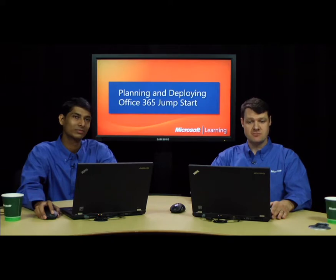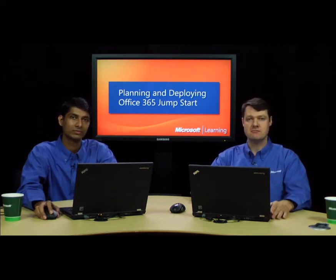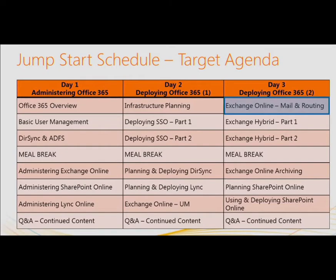We're starting this morning with Module 7, which is Exchange Mail Routing, so Forefront Online Protection. In context of day three of the overall Jumpstart program, we cover the first four modules on Exchange Online — a very big chunk — and the last two modules cover SharePoint Online.